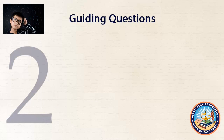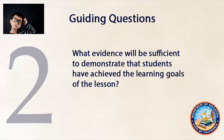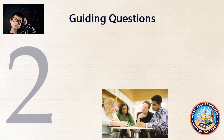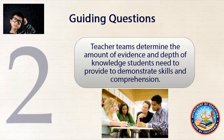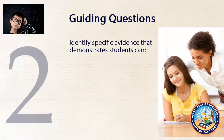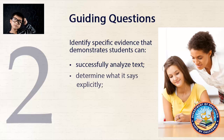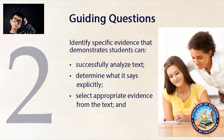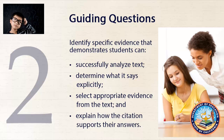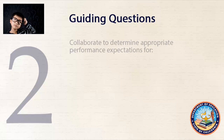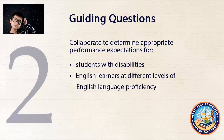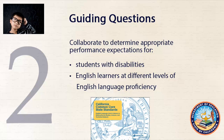Guiding Question 2: What evidence will be sufficient to demonstrate that students have achieved the learning goals of the lesson? At this point, teacher teams determine the amount of evidence and depth of knowledge students need to provide to demonstrate skills and comprehension. They collaborate to identify specific evidence, verbal or written, that demonstrates — in this case using the sixth grade standard — that their students can successfully analyze text, determine what it says explicitly, select appropriate evidence from the text, and explain how the citation supports their answers. Ideally, teacher teams will also collaborate to determine appropriate performance expectations for students with disabilities and for English learners at different levels of English language proficiency, based on the California ELD standards.